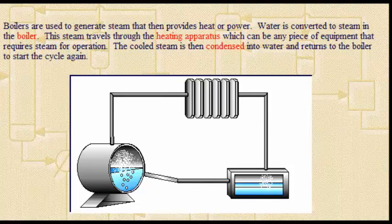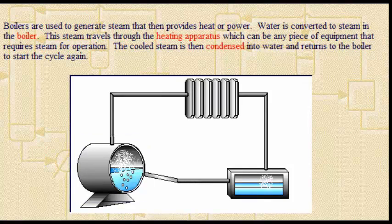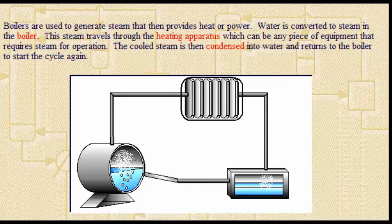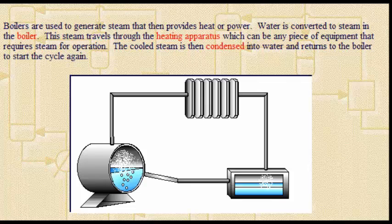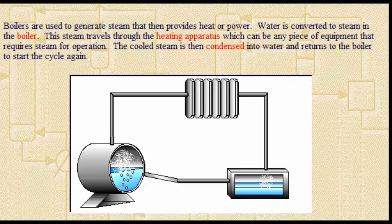Water is converted to steam in the boiler. This steam travels through the heating apparatus, which can be any piece of equipment that requires steam for operation. The cooled steam is then condensed into water that returns to the boiler to start the cycle again.